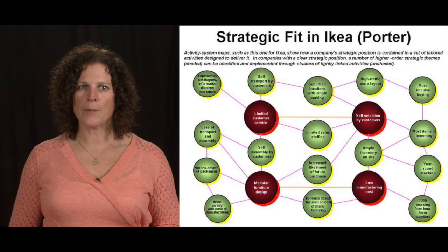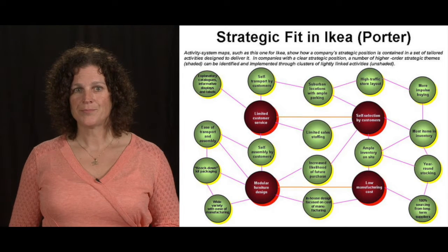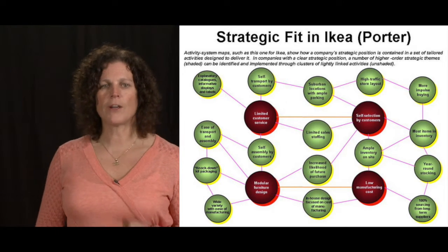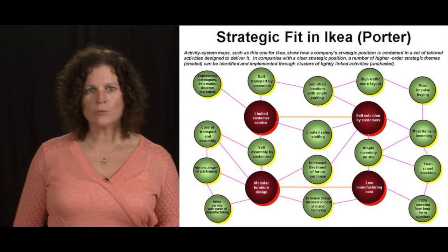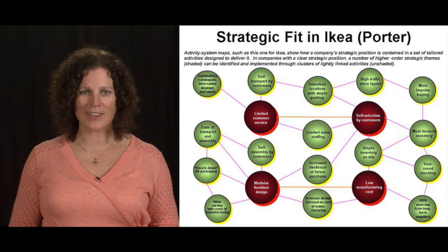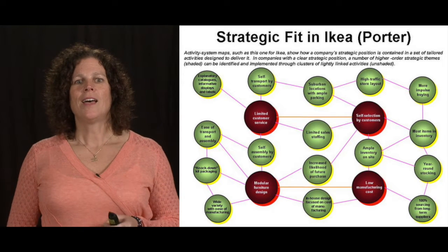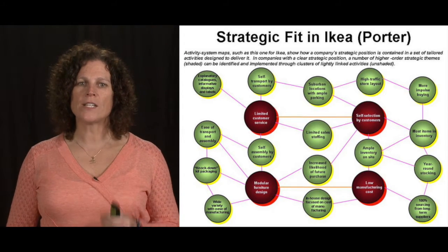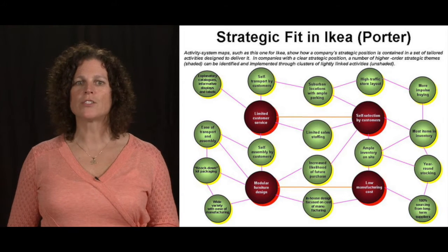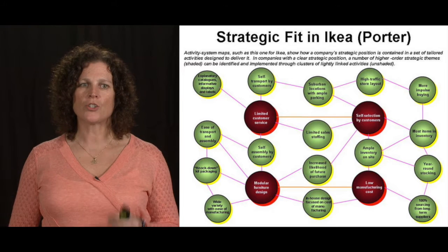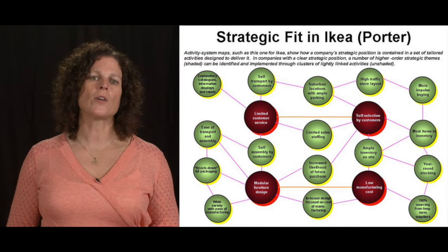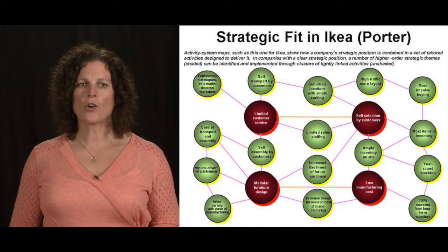Another one I'm going to show you as an example is IKEA. Now IKEA has a very targeted core customer, right? One that wants value, one that loves putting furniture together. It's not me. And again, they have four differentiating actions. Those are the red circles. And each one of those are key to ensuring that they stay focused on what matters to their core customer.